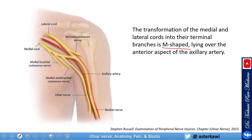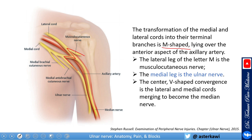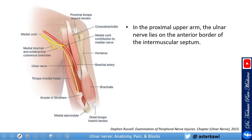The transformation of the medial and lateral cords into their terminal branches is M-shaped, lying over the anterior aspect of the axillary artery. The lateral leg of the letter M is the musculocutaneous nerve, the medial leg is the ulnar nerve, and the center V-shaped convergence is the lateral and medial cord merging to become the median nerve.